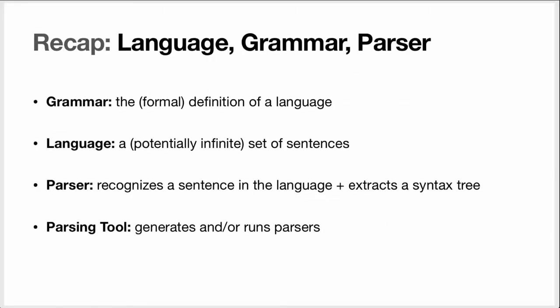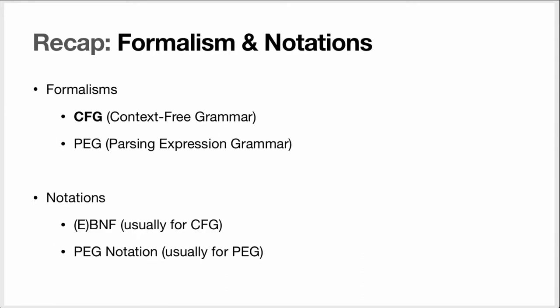Over the past few lessons we've learned that a grammar is the formal definition of a language. A language is a set of sentences, potentially infinite. A parser recognizes a sentence in a language and extracts the syntax tree that matches that sentence. And a parsing tool generates or runs parsers. We've seen two grammar formalisms: context-free grammars and parsing expression grammars, and we've seen some notations for them. Notations are not that important.